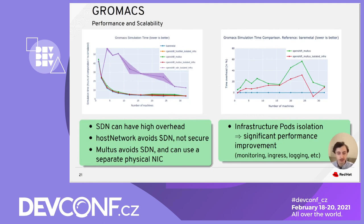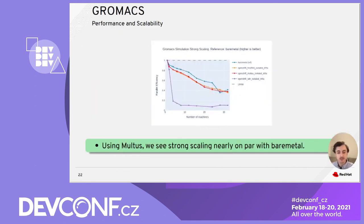The graph on the right compares benchmark time as a percent of bare metal for two configurations. The green line reflects GROMAX performance when some cluster infrastructure pods — such as monitoring, the cluster ingress controller, and logging — are running on the same nodes as GROMAX. The red line shows performance while isolating these infrastructure pods to two dedicated infrastructure nodes, which improves performance and reduces variability. In both cases, Multus is used for networking. Finally, a strong scaling graph shows that using Multus or host network, GROMAX achieves strong scaling nearly on par with bare metal.